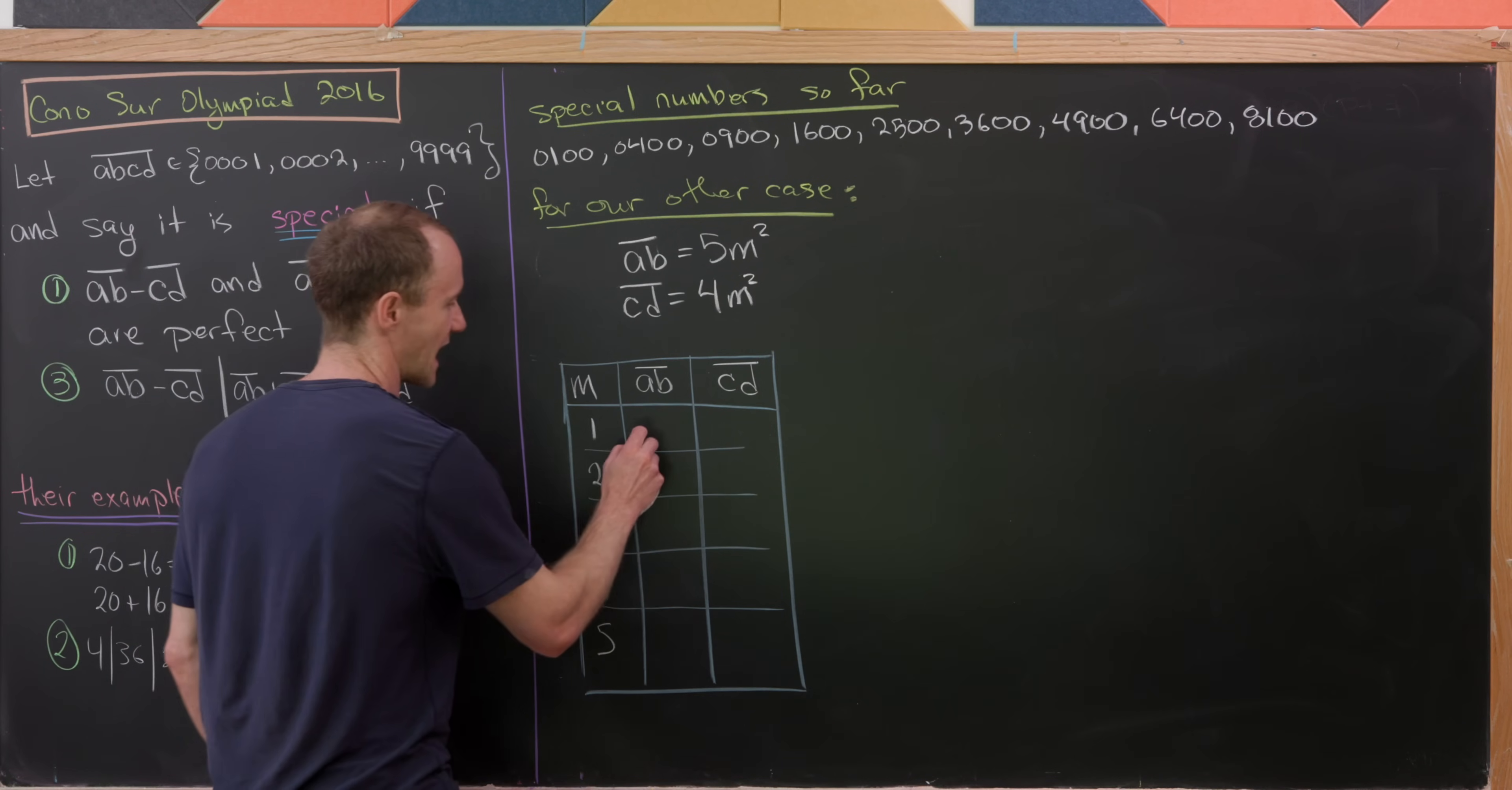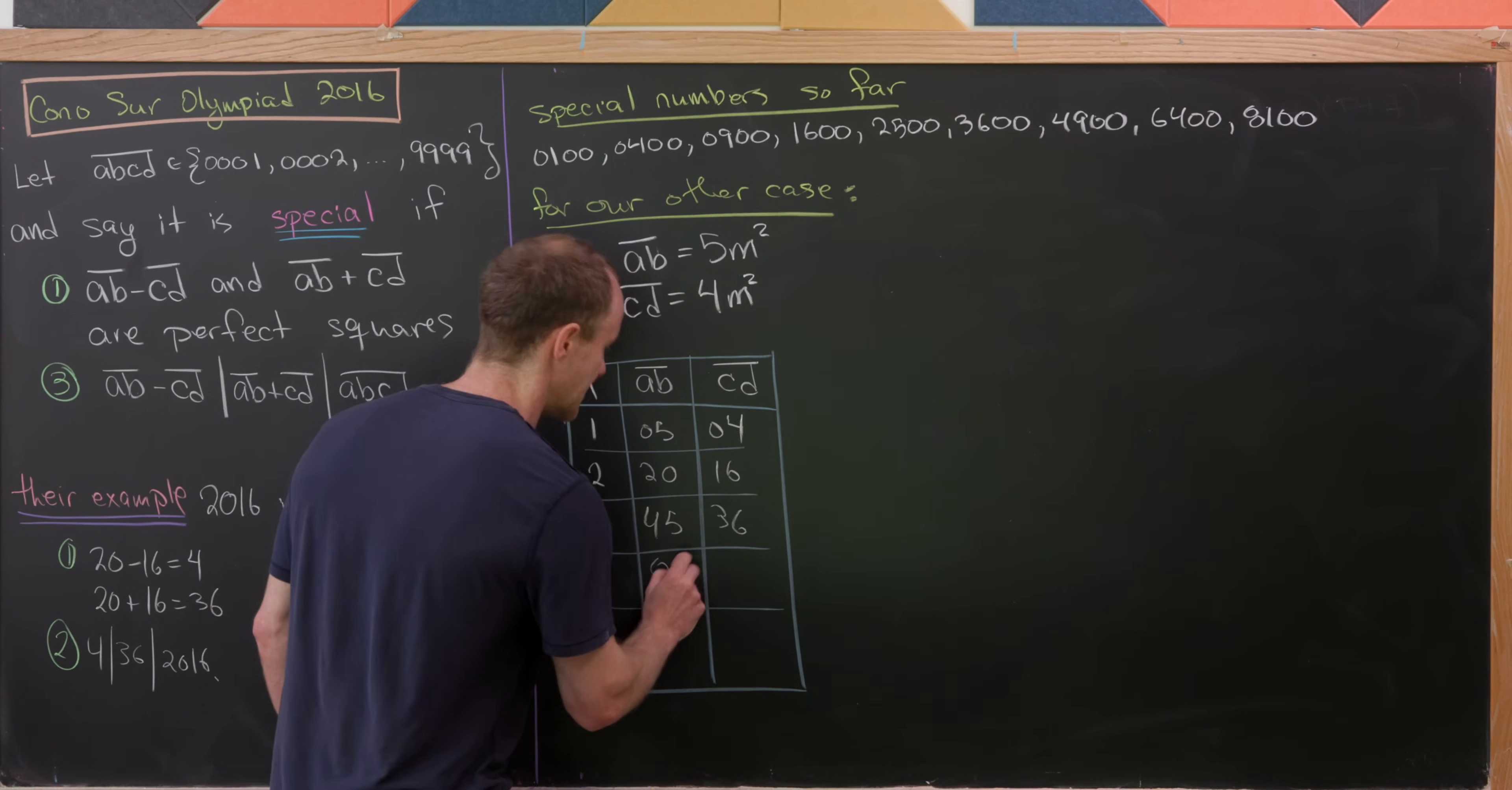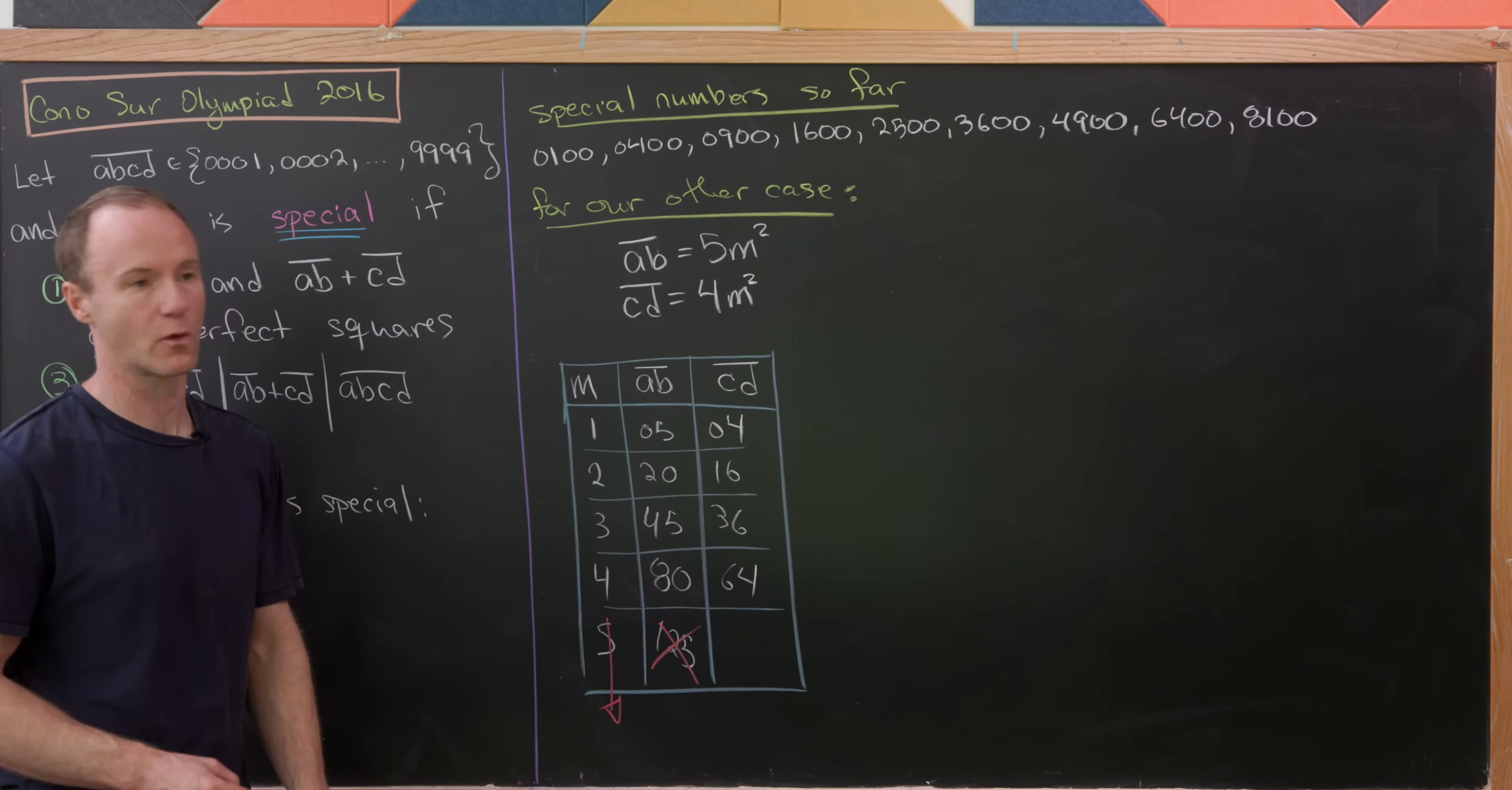For M equals 1, AB is 05 and CD is 04. For M equals 2, we have 20 and 16. For M equals 3, we have 45 and 36. For M equals 4, we have 80 and 64. For M equals 5, we'd have 5 times 25 which is 125, but that doesn't work because AB is a two-digit number. So we don't have to consider anything past M equals 4.